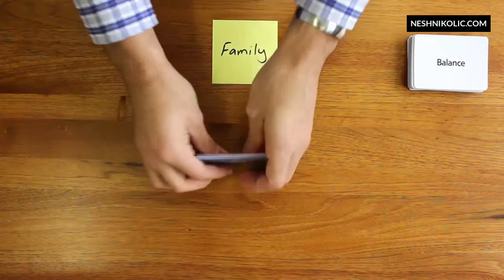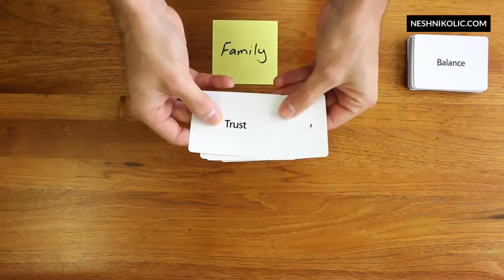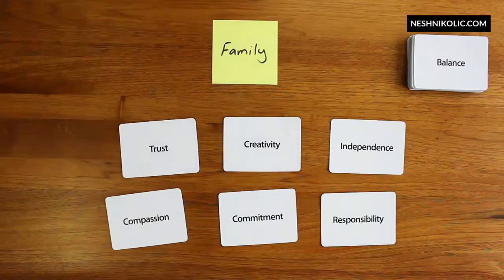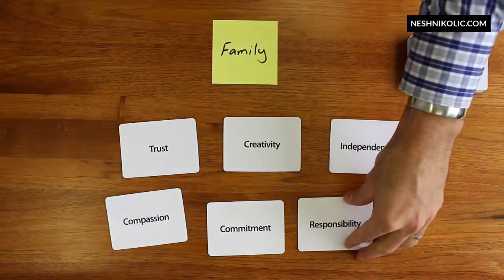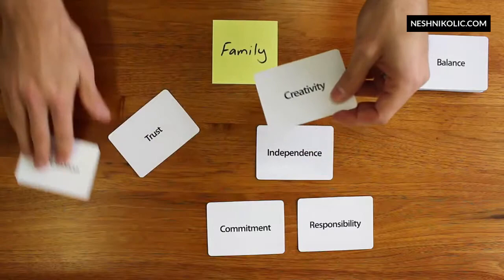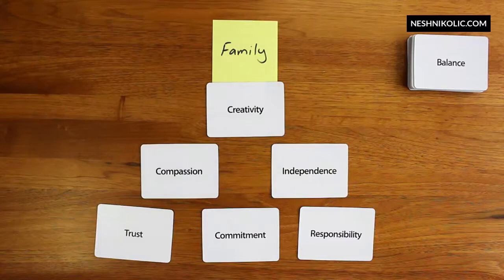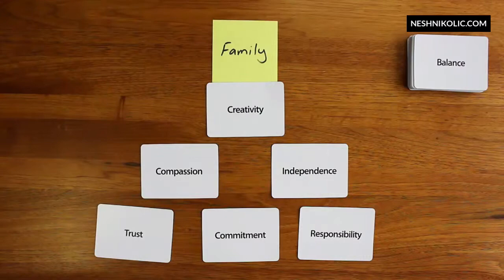Once again they sort through the pile, and for this exercise we'll use these as our primary ones. We would now ask our clients to arrange these primary values under 'family' and how they would sit. We put them all out first, and then look at how they sit. The client might arrange commitment, responsibility, independence, trust, compassion, and creativity.